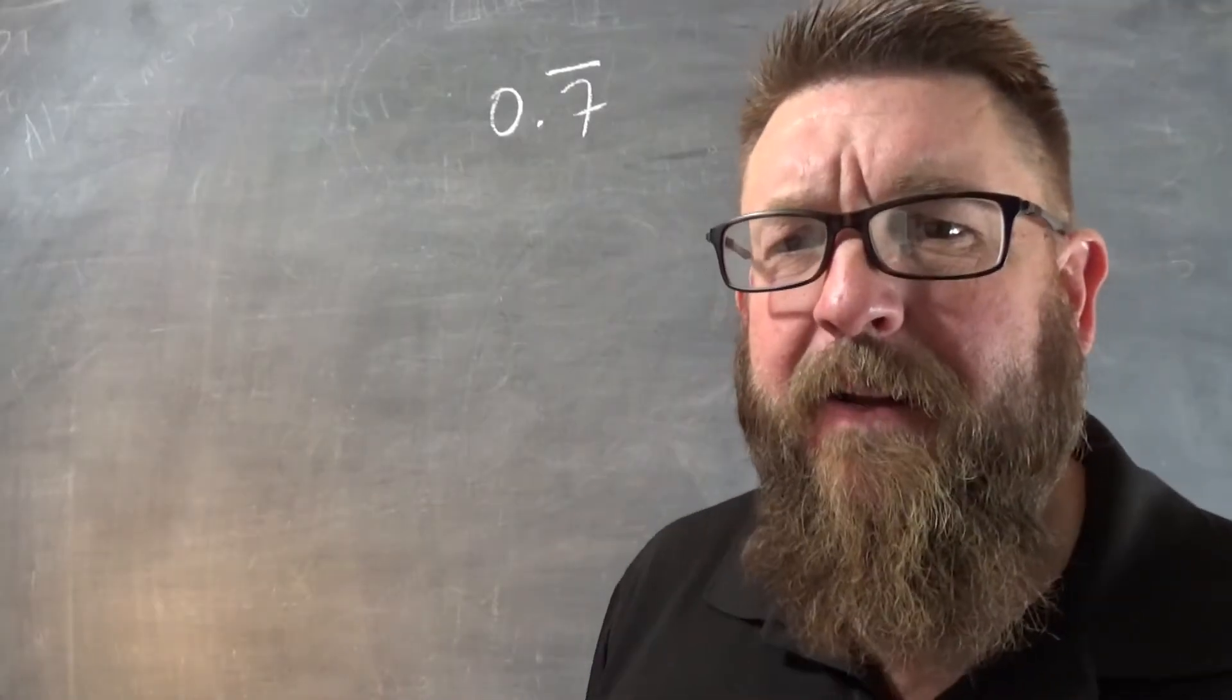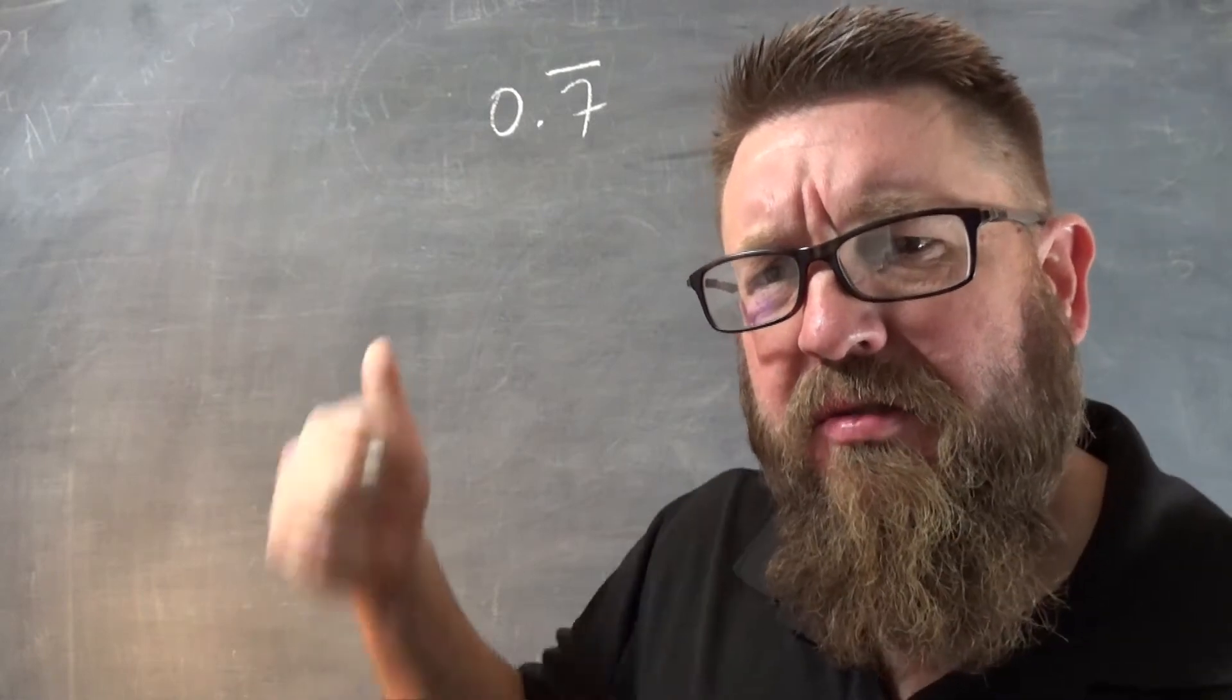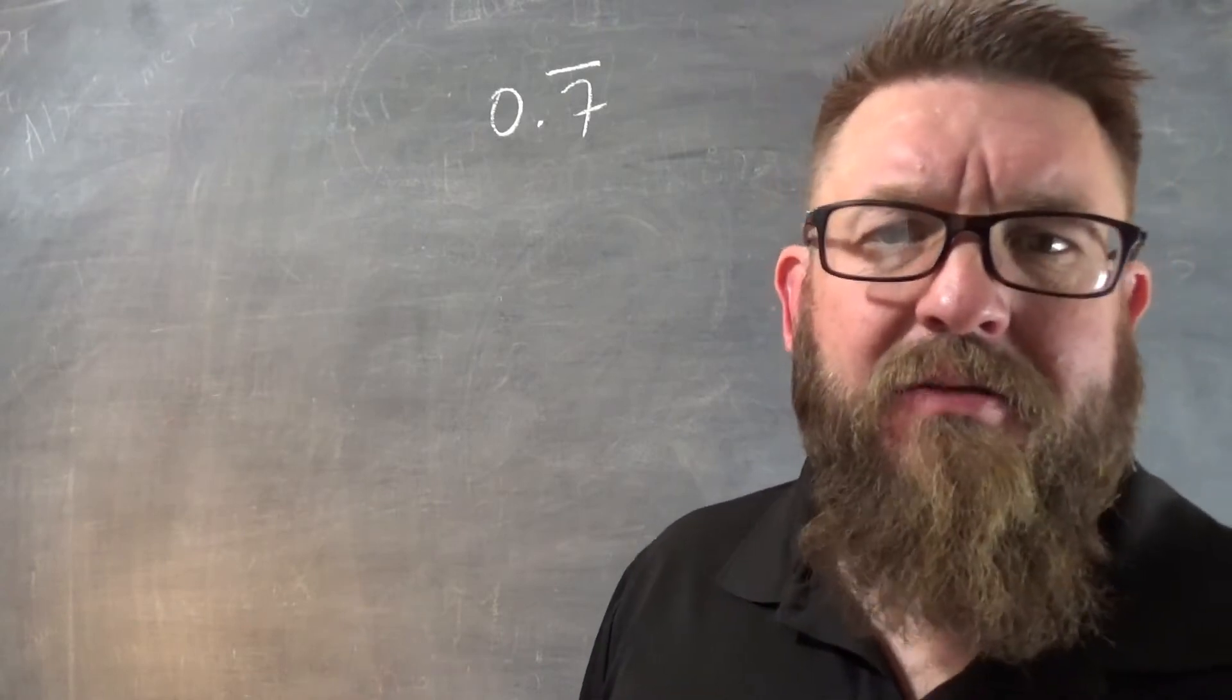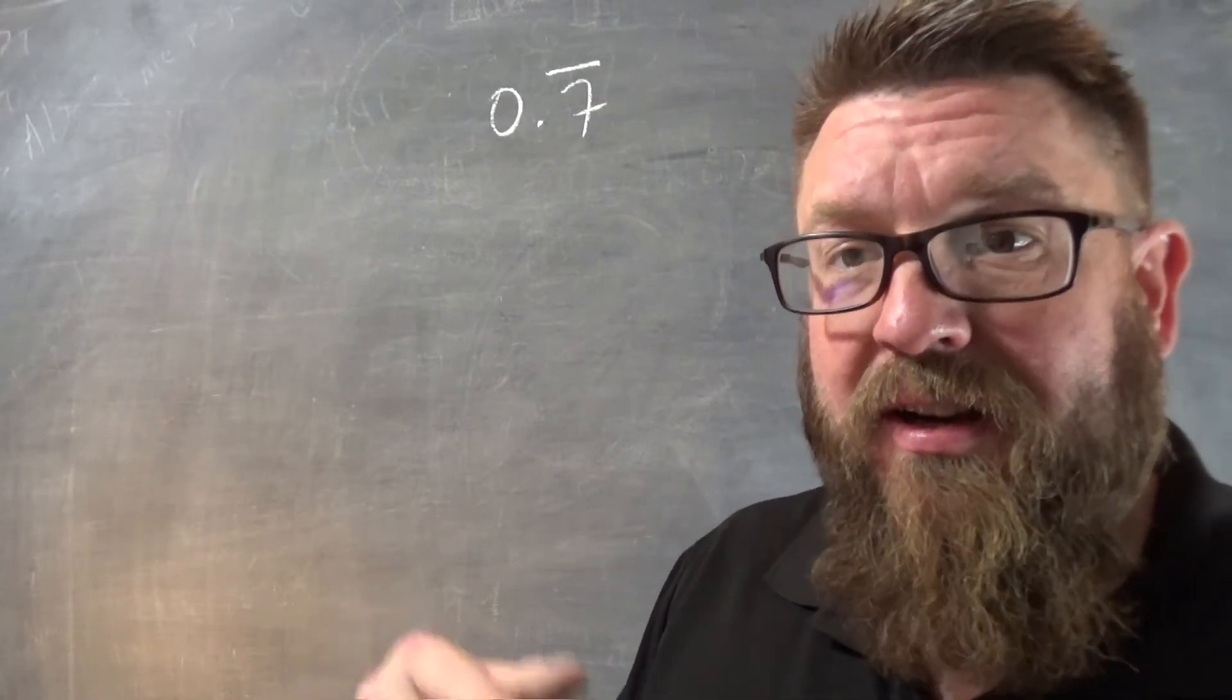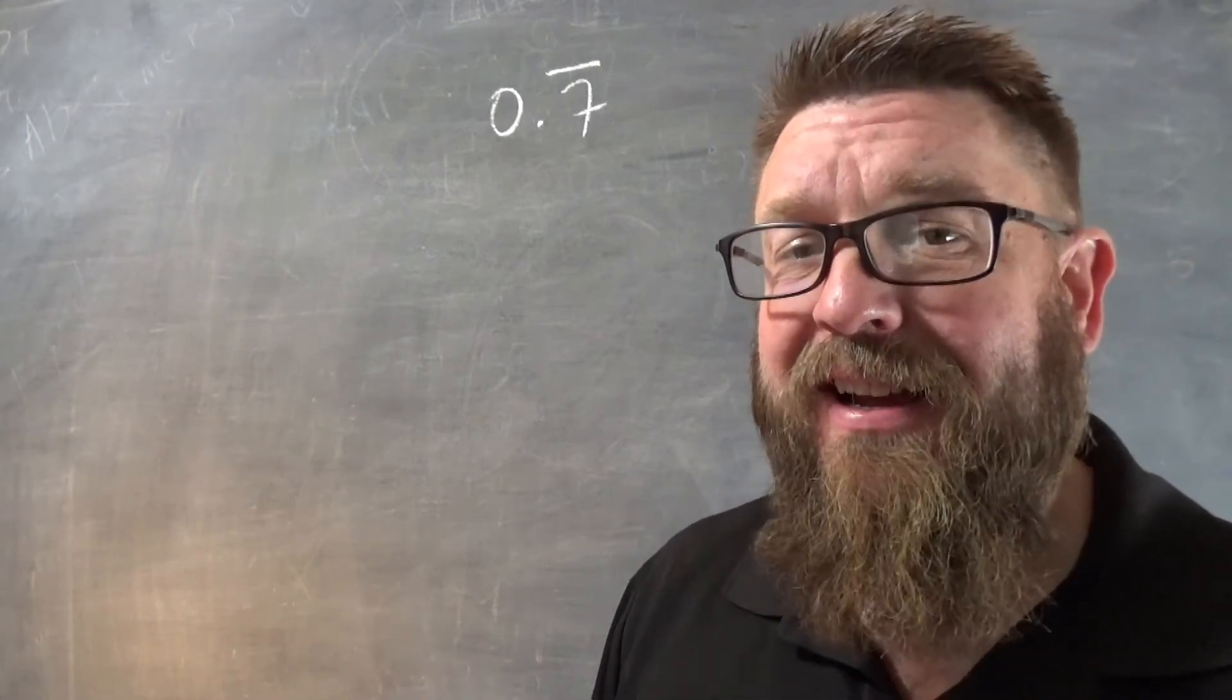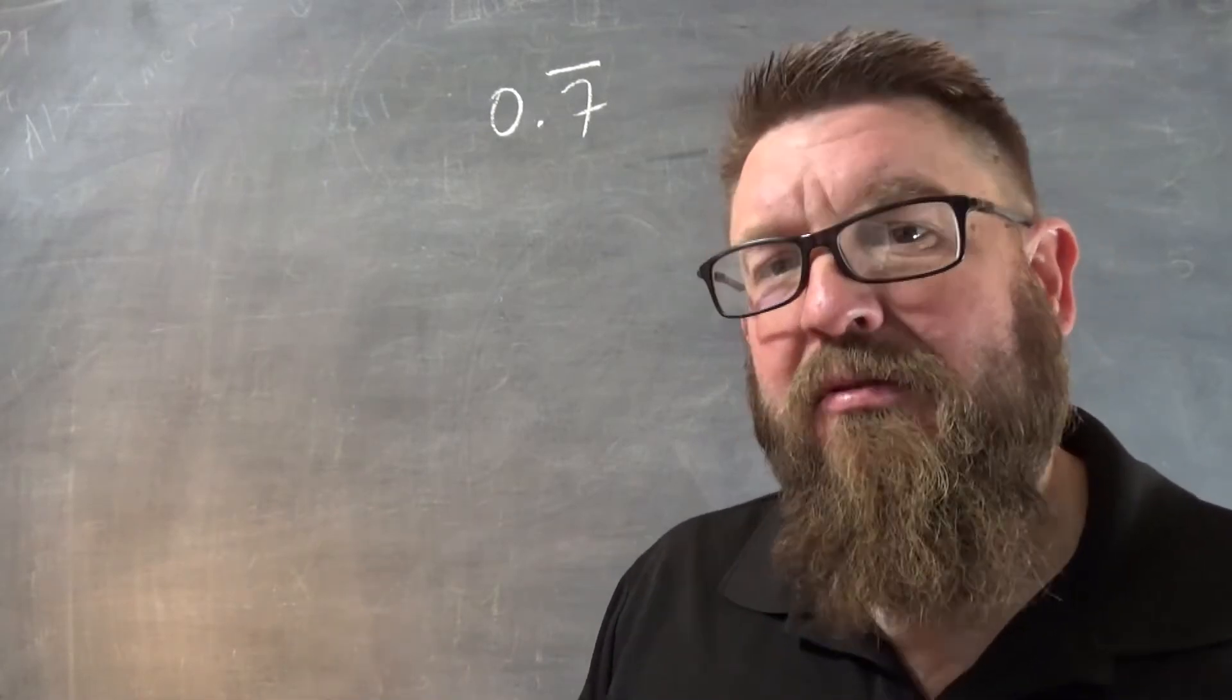0.7 repeating. We need to know the fraction whose decimal equivalent is that, because that's a rational number. So what if we're asked to write it as a ratio? Well, here's what we need to know. We need to know a couple of little steps, and unfortunately, you might not know the algebra behind this, but I'll walk you through it, and we'll keep it simple.